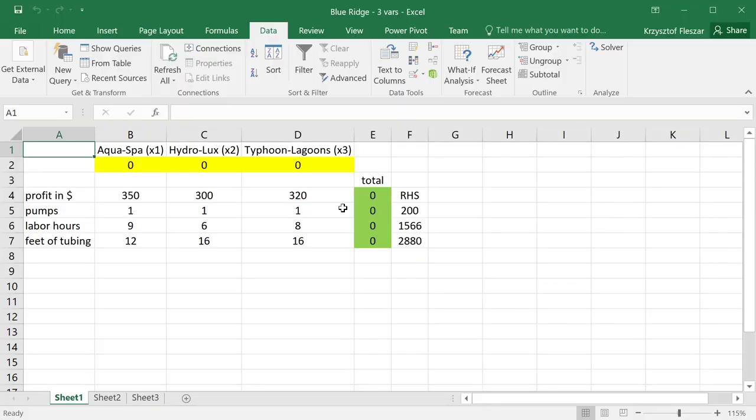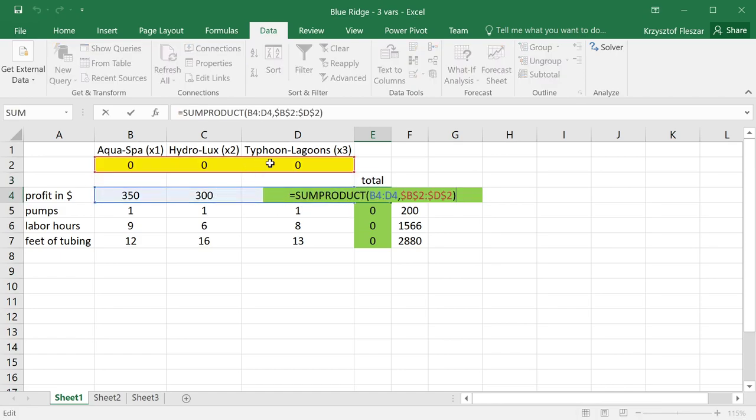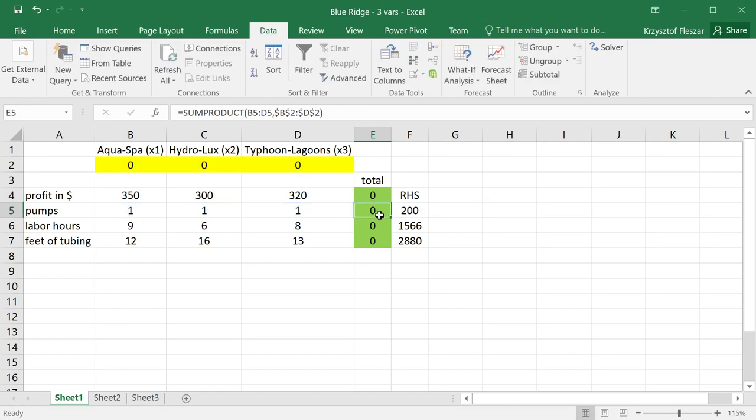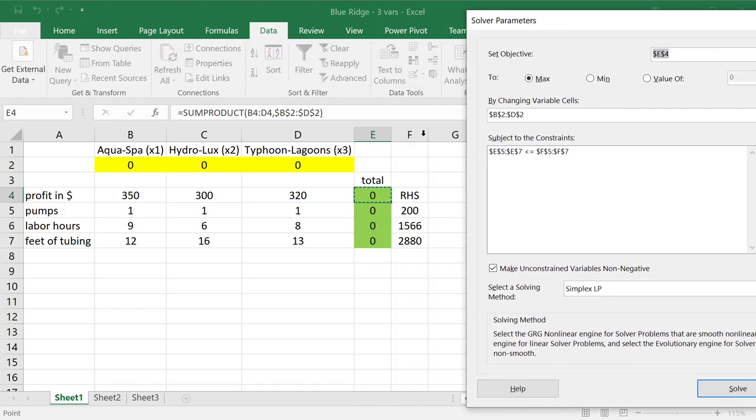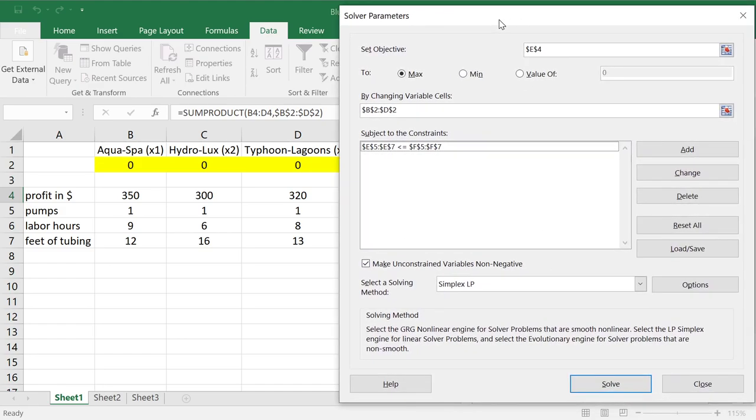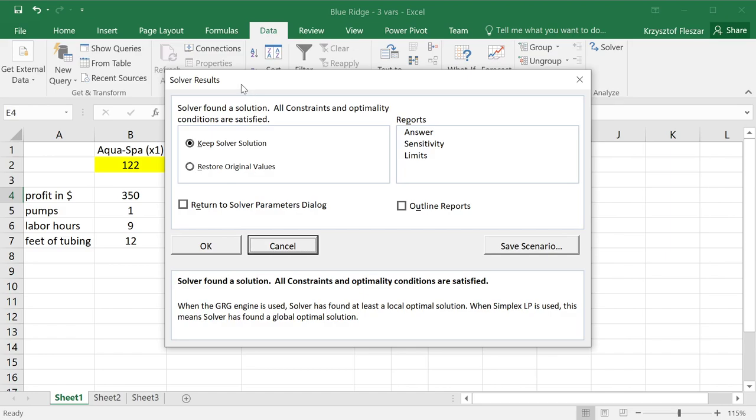So if you want to be convinced, I formulated here a model with those three decision variables. So if you recall, we had AquaSpa and HydroLux, and now I added a third decision variable for Typhoon Lagoon, with the parameters, as we said, $320 of profit per unit, one pump, eight labor hours, and 13 feet of tubing used. Notice that I updated this model such that the total profit and all these functions take into account the three decision variables and three parameters each. So now if I go to the solver, and everything is entered here already, the same constraints except that there is now three decision variables. So decide all those three, maximize the profit which is in this function, and subject to the three constraints which are now updated with the new decision variable.